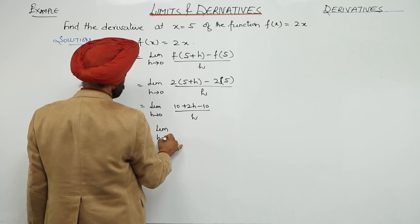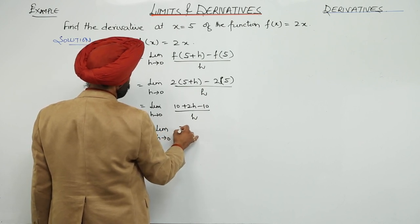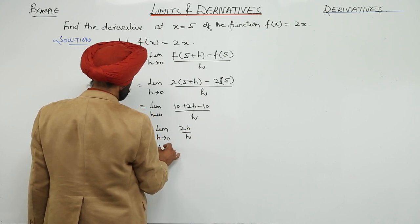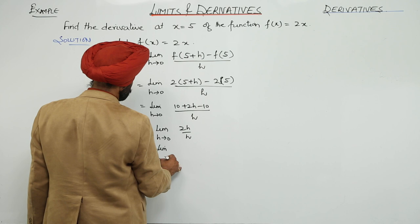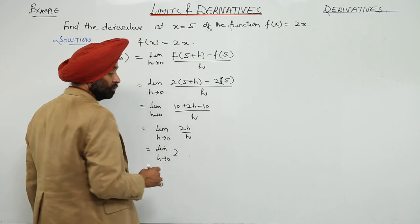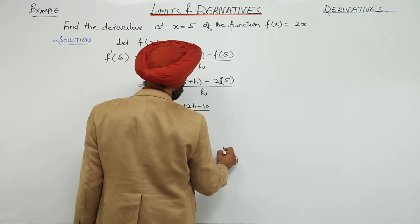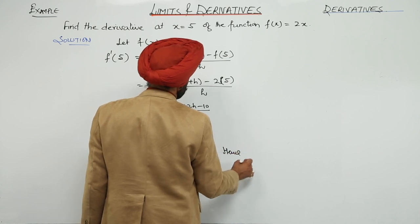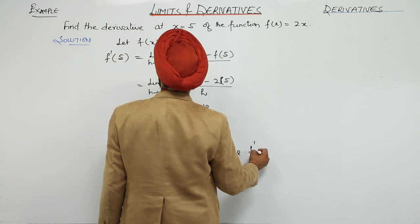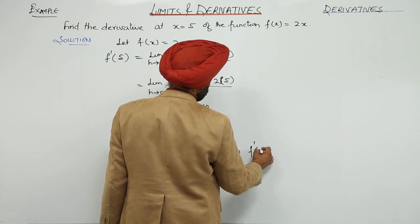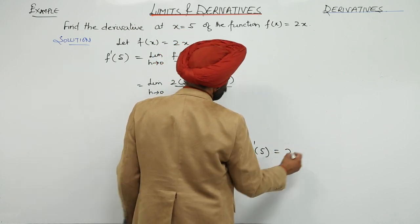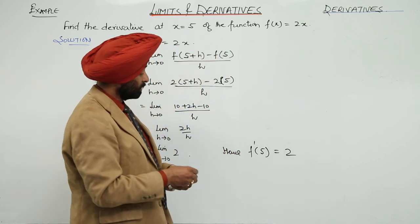Limit h approaches to 0 of 2h upon h. Limit h approaches to 0 of 2. Hence f'(5) is equal to 2. This is the answer.